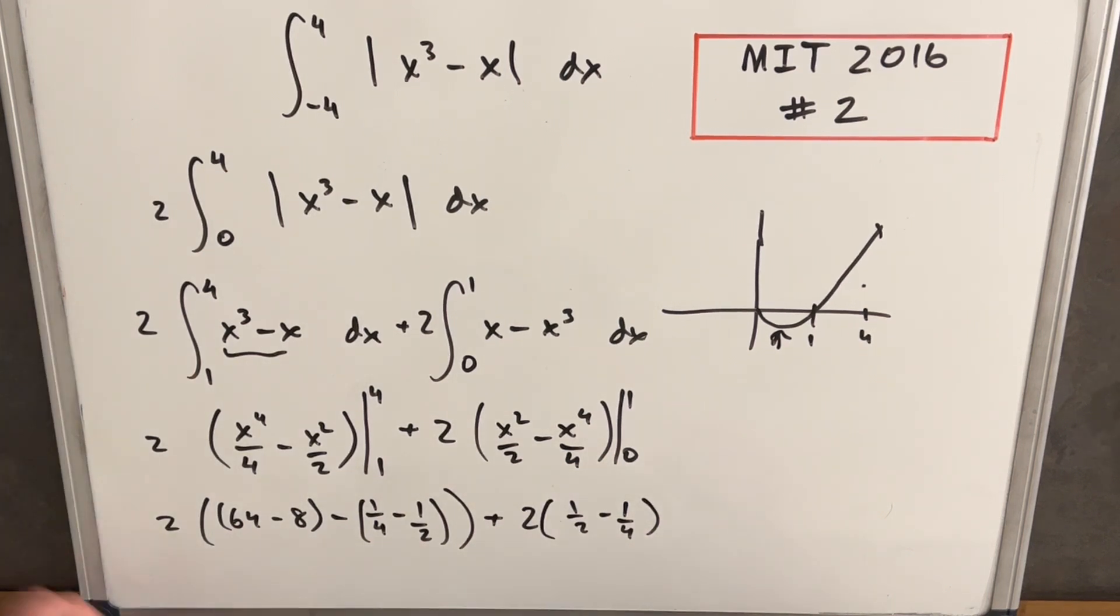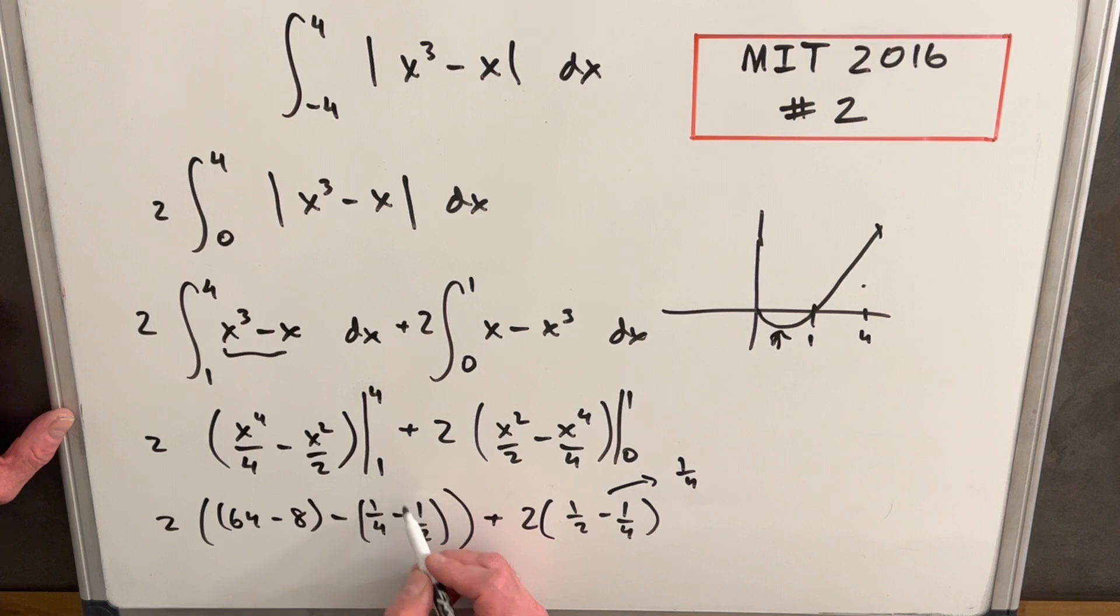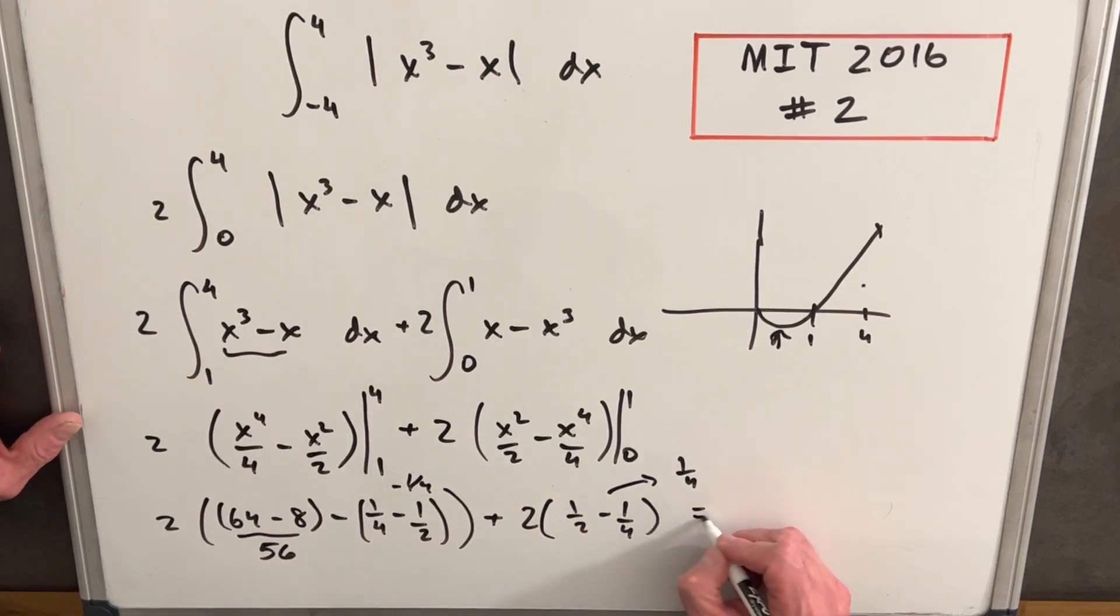Now we just need to simplify some arithmetic. So this piece right here, that's going to be one fourth, just evaluating in the parentheses. And this one is going to be minus one fourth. And this is 56. So let's see what happens when we multiply that out.